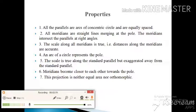Meridians become closer to each other towards the pole. The scale along the meridians is true. Number seven: This projection is neither equal area nor orthomorphic.